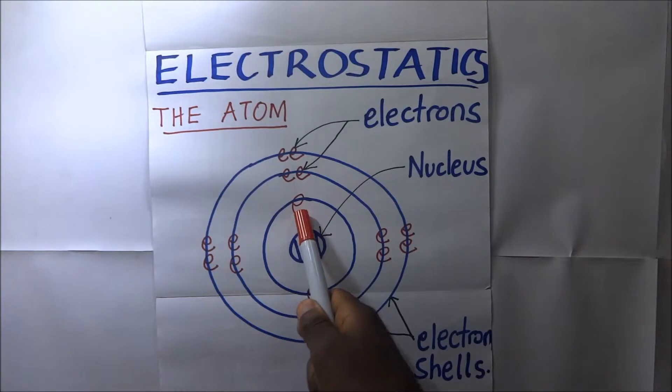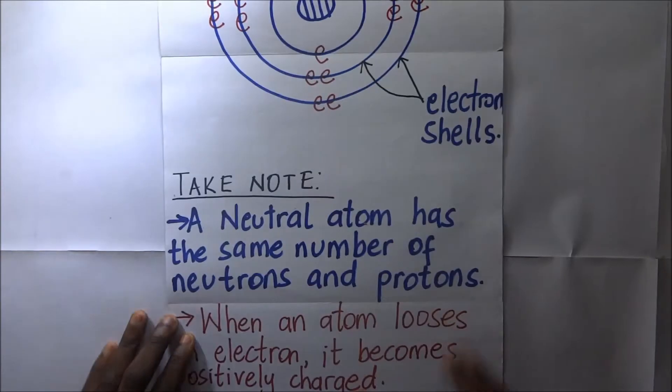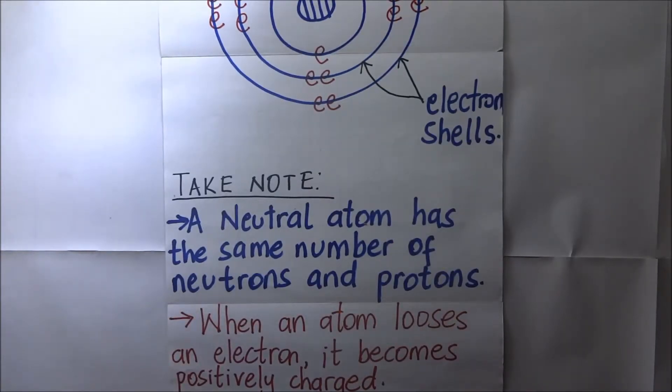When an atom is neutral, it means that the number of electrons that are rotating around this nucleus is equal to the number of protons that are inside. It means that the positives and negatives are the same, so that atom is considered neutral.